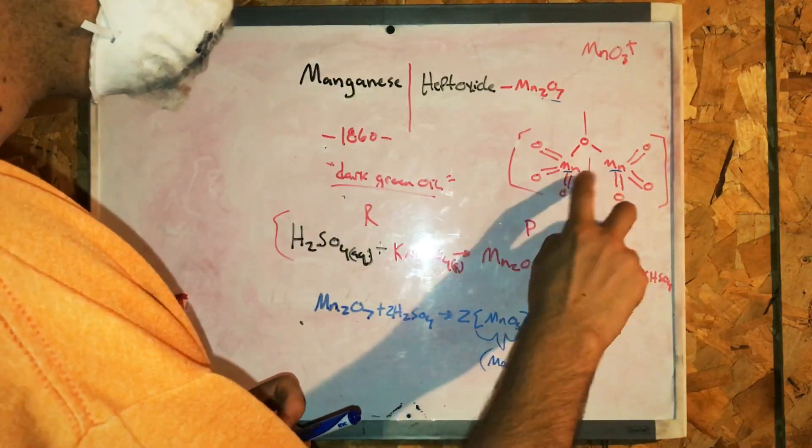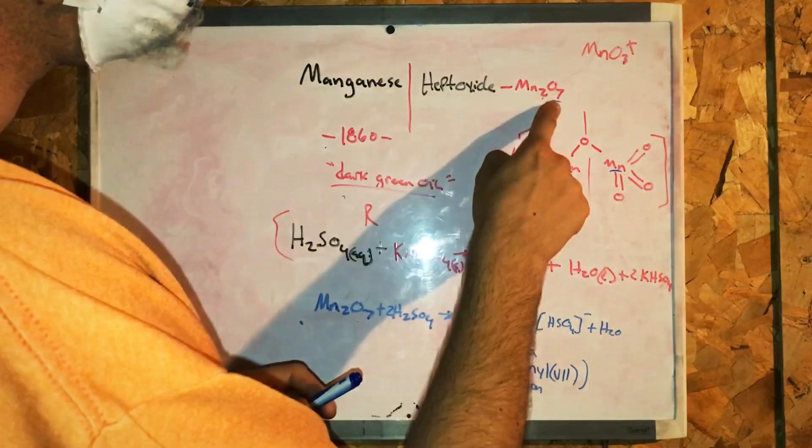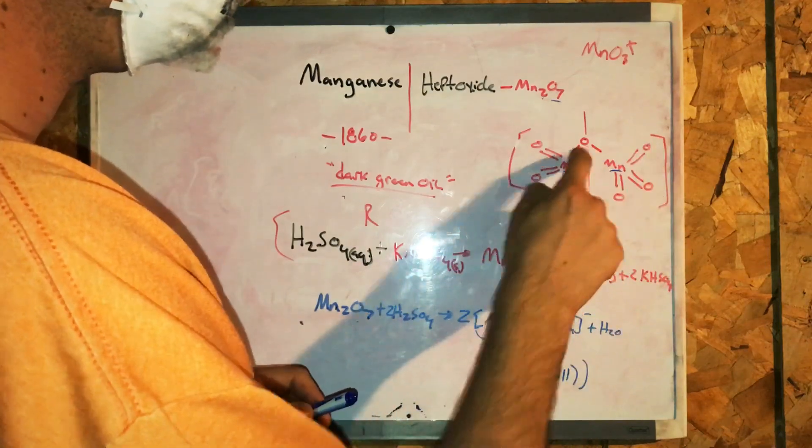Manganese atoms, two. Mn2. How many oxygen atoms? O7. So there's three oxygens here, three here, and one there.